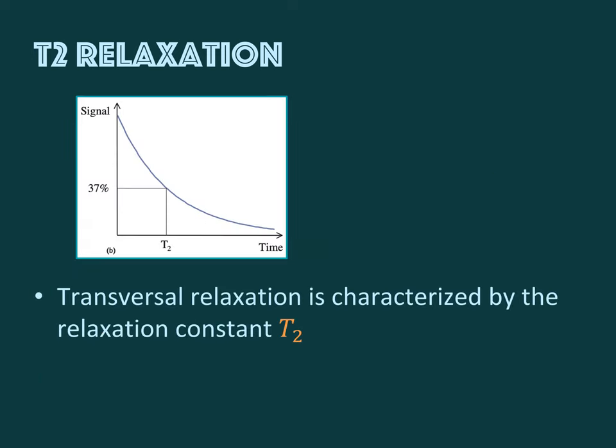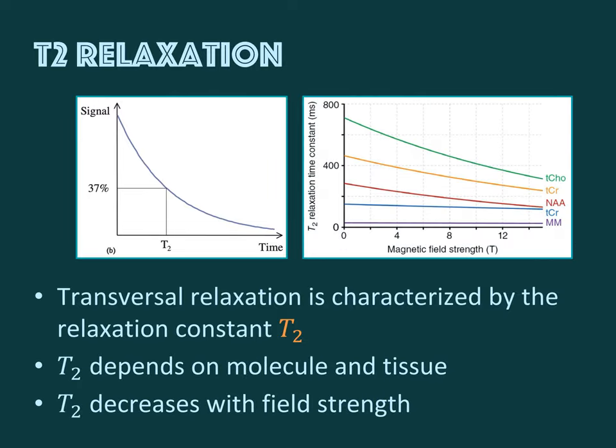Like the longitudinal T1 relaxation, this process follows an exponential path back to equilibrium. In the case of transversal magnetization, that equilibrium is zero — because at equilibrium our magnetization vector points exactly along the z-axis, meaning there is no magnetization in x or y directions. We characterize this decay with the transversal relaxation time constant T2, which is the time when the transversal magnetization has dropped to 37% of the amount after the excitation pulse. Like T1, this depends on the metabolite and the tissue, and in contrast to T1, T2 generally decreases with field strength.